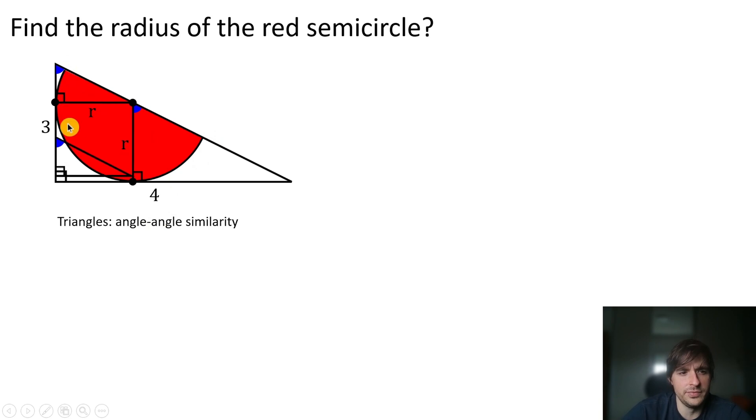We have this triangle here where this side is r and this side is 3 minus r. And we have this triangle here where this side is r (the radius) and this side here is 4 minus r.